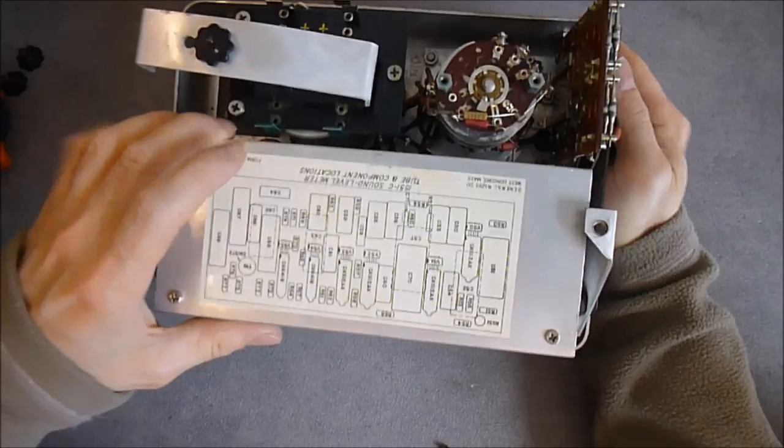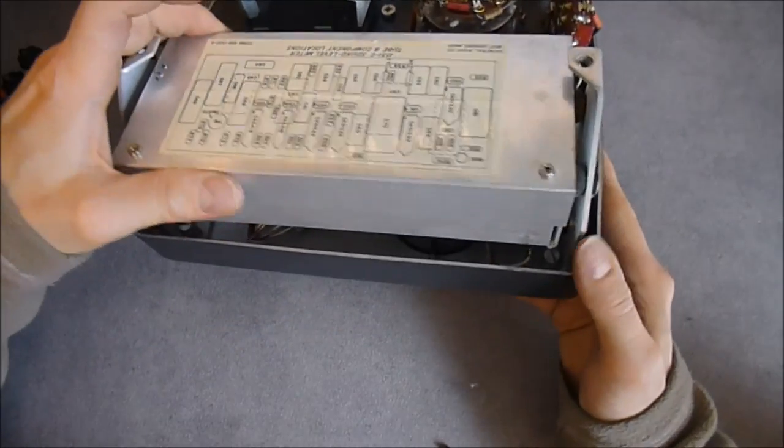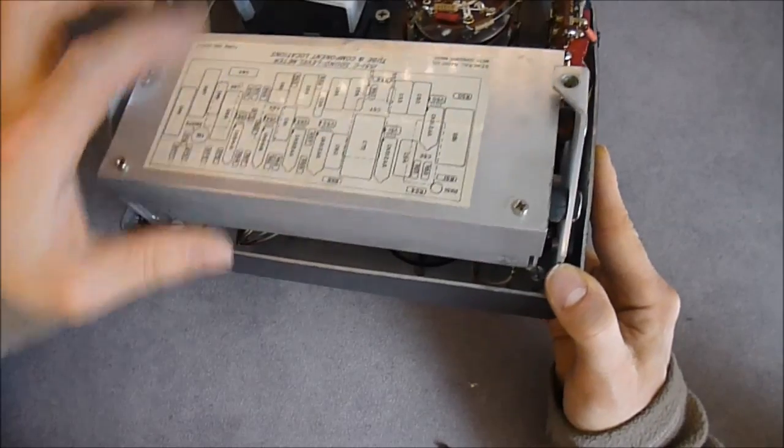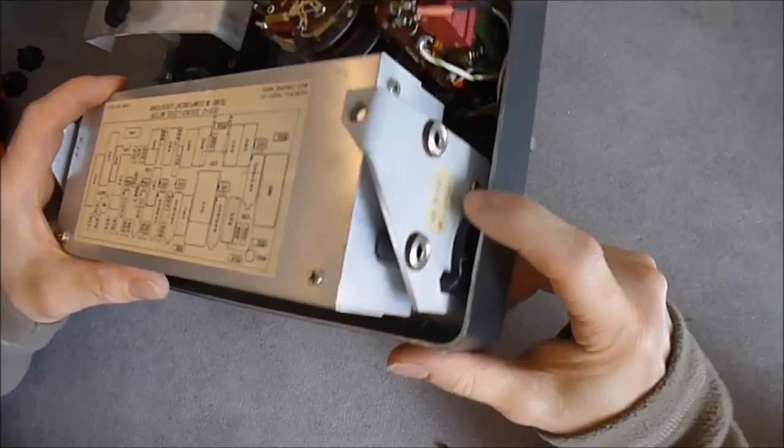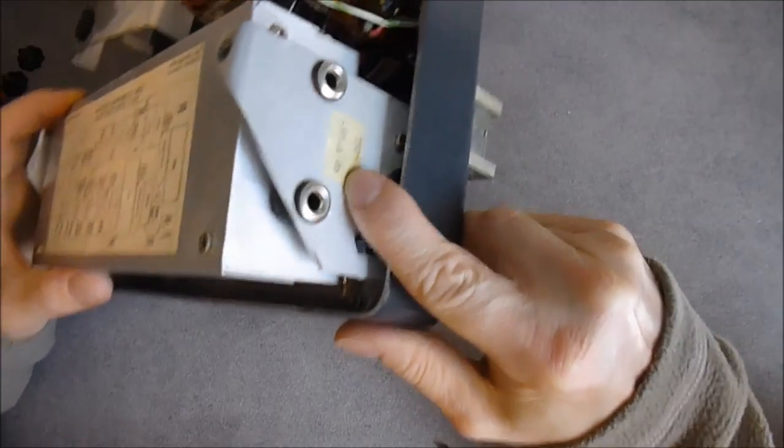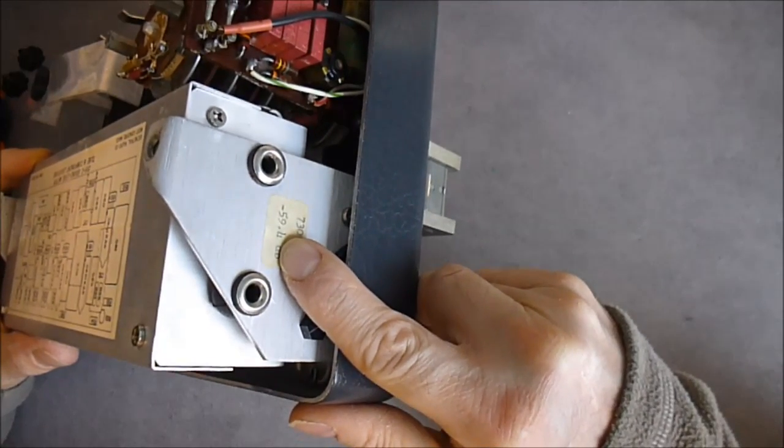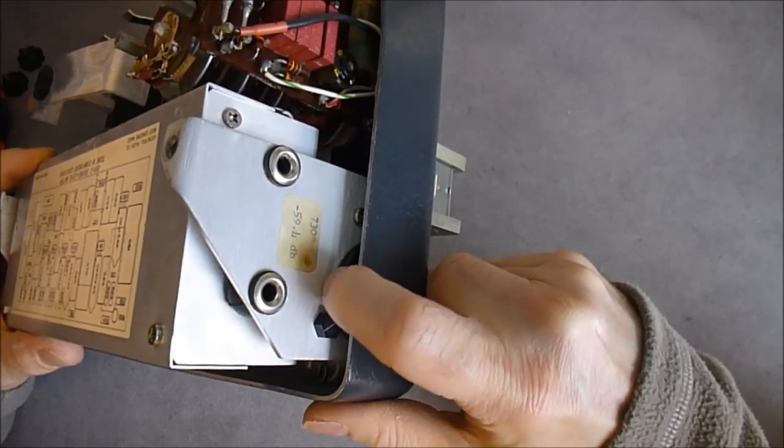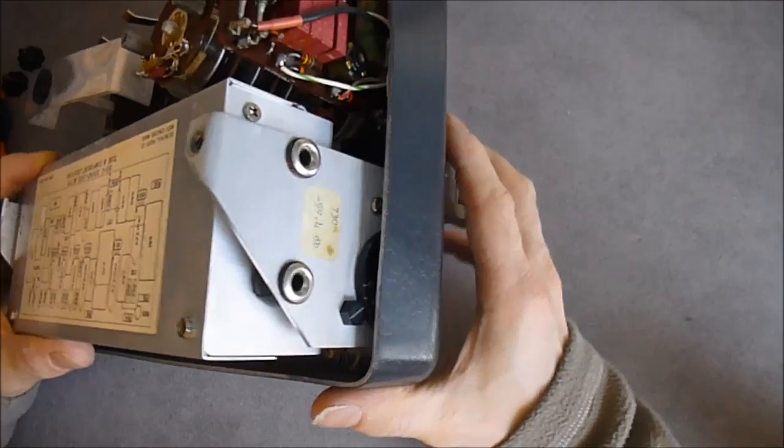It seems to protect the tubes inside. Here there is a setting with a sticker you can see, minus 59.4 dB. So it must be for setting the sensitivity according to the microphone, I guess.